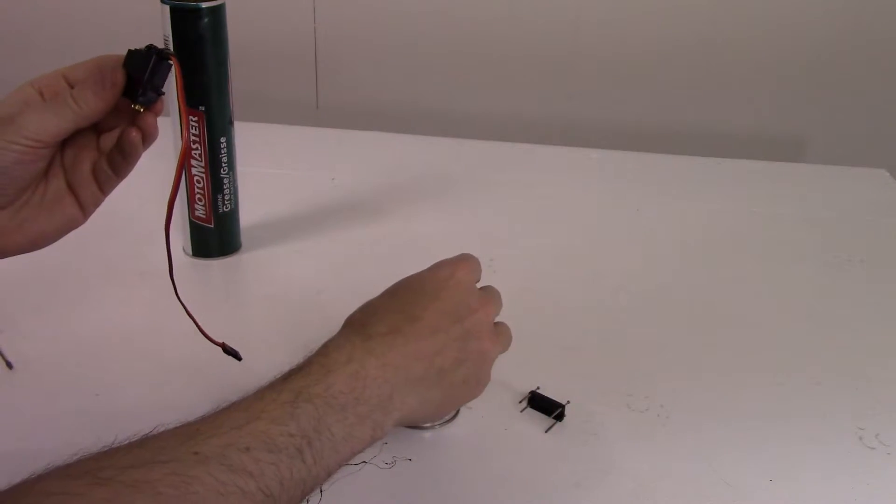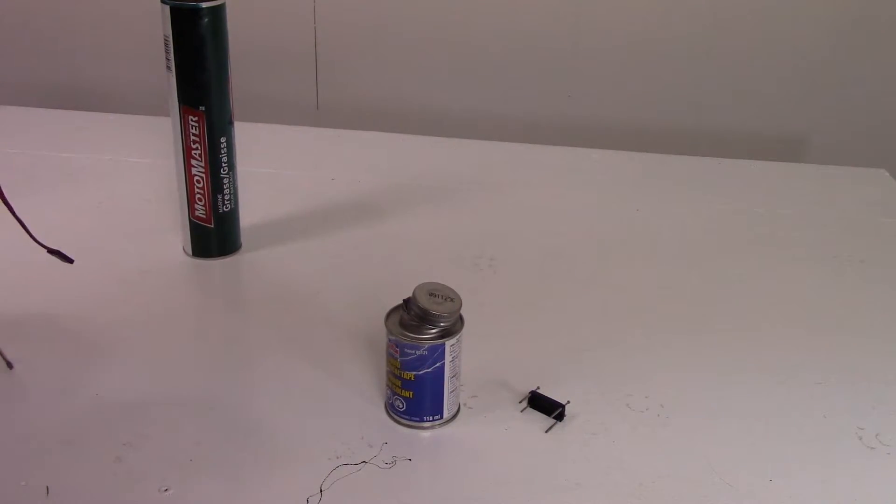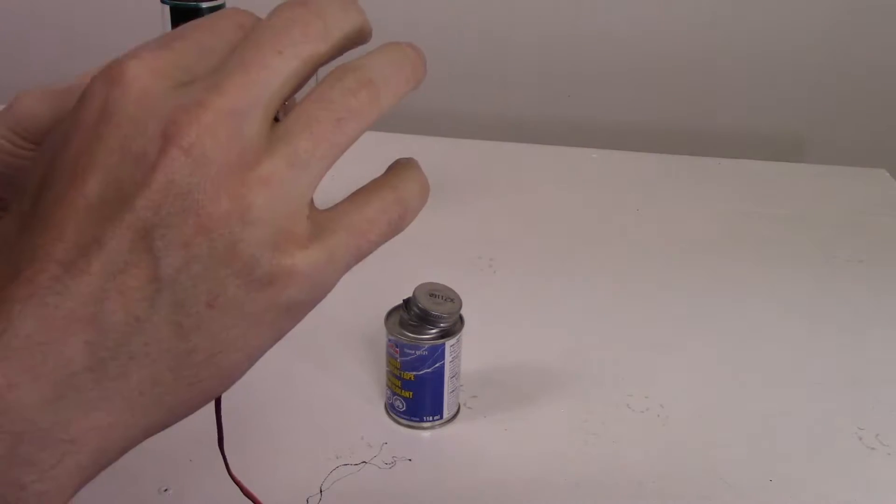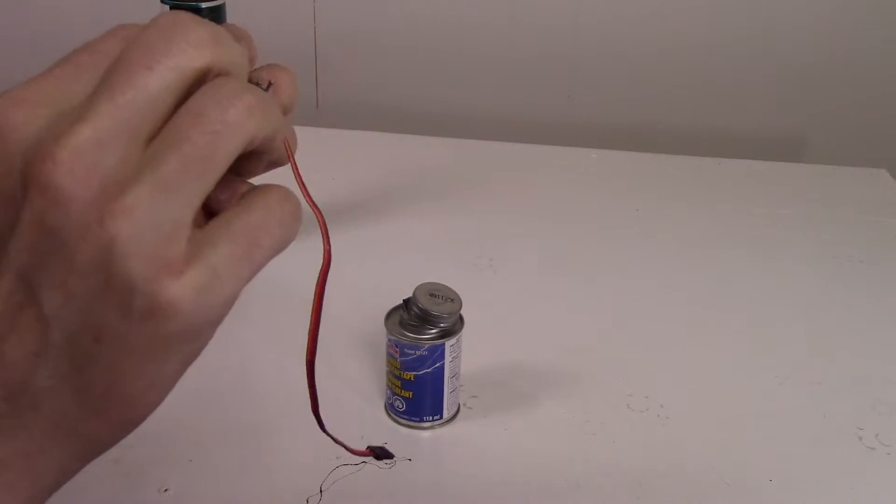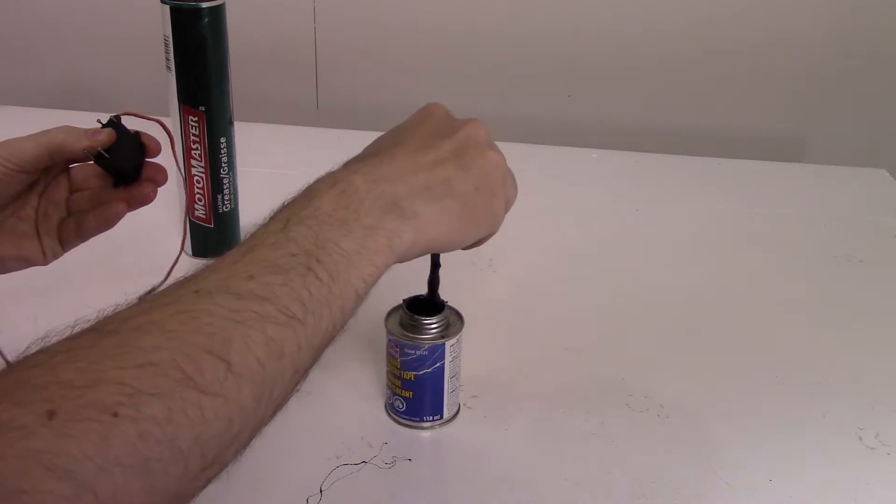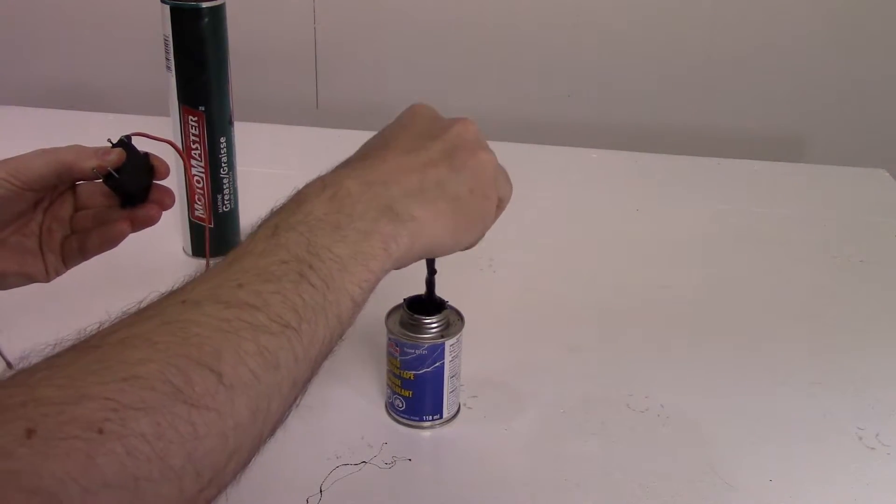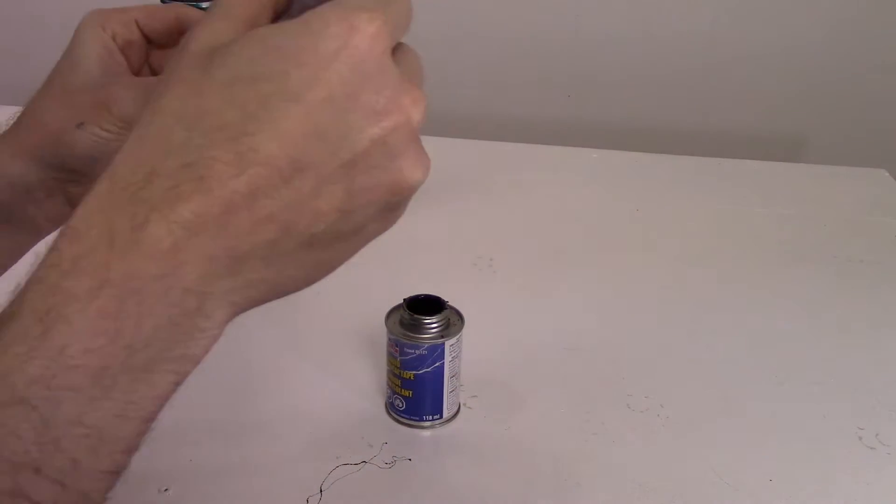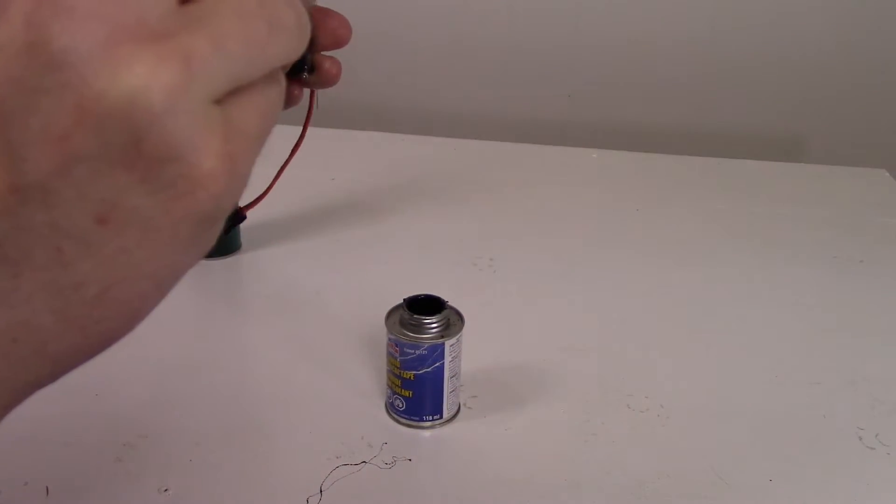And what we're going to do is close it up now. Before we tighten the screws all the way, we're going to add a little bit more of this electrical tape just around the screw. Just like this.